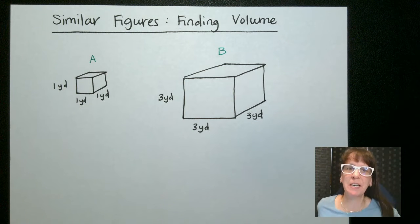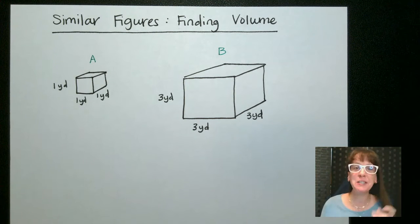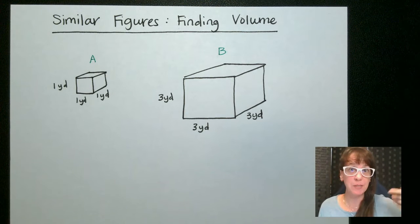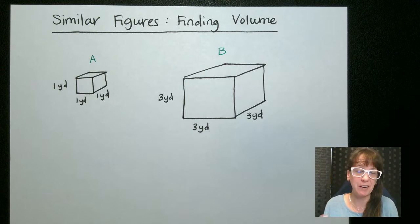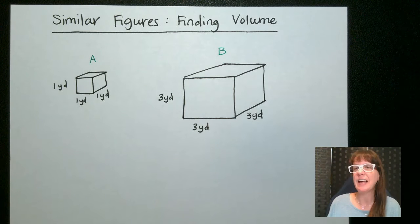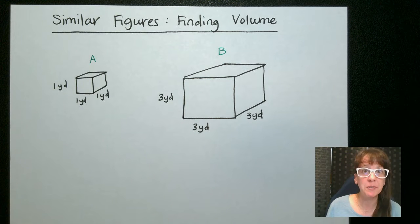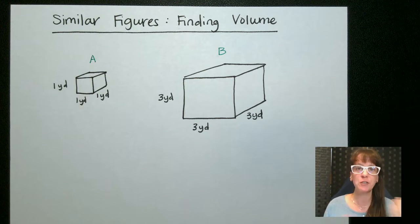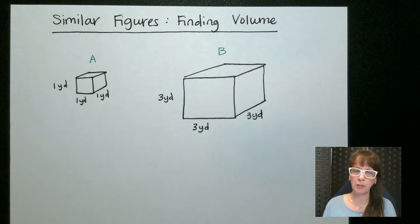Hi friends, welcome back. Today we're talking about using similar figures to find your volume. So in a previous lesson we talked about finding the perimeter or sides to figure out your scale factor. And then once you have your scale factor you can figure out the ratio of the areas based on your scale factor. So now we're going to do the ratio of the volume.